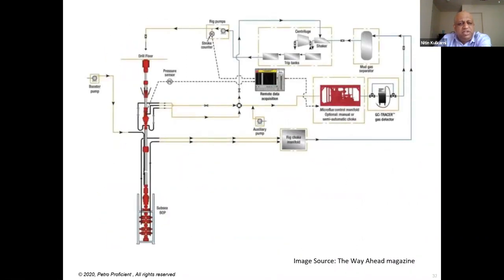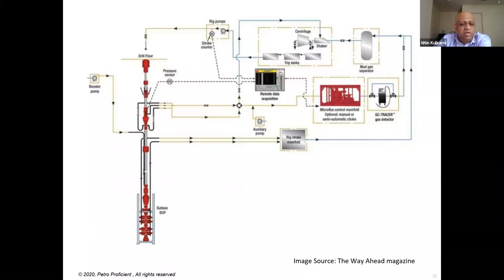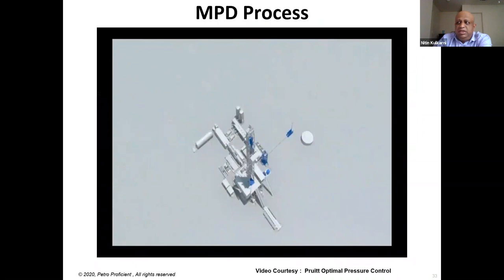For an offshore application, the RCD is installed below your tensioner rig in the marine riser, and from there the fluids are routed to your control system. This animation from Pruitt Optimum Pressure Control — a leading MPD service provider — gives a good overview of the entire MPD process.